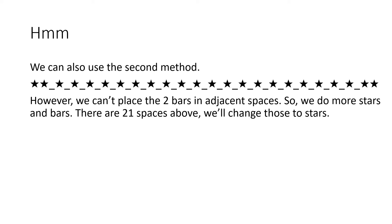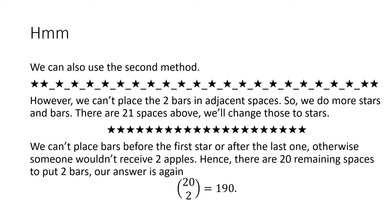We can also use the second method for this question, though it is a little bit more complicated. This time we can't place 2 bars in adjacent spaces, so we have to do more stars and bars. There are 21 spaces and we'll change those to stars. We can't place bars before or after the first and last one respectively, otherwise someone wouldn't receive 2 apples. Hence there are 20 remaining spaces to put 2 bars, and our answer is again 20 choose 2, or 190. You can use the second method but it's a bit more complicated, so I would recommend the first one for this question.